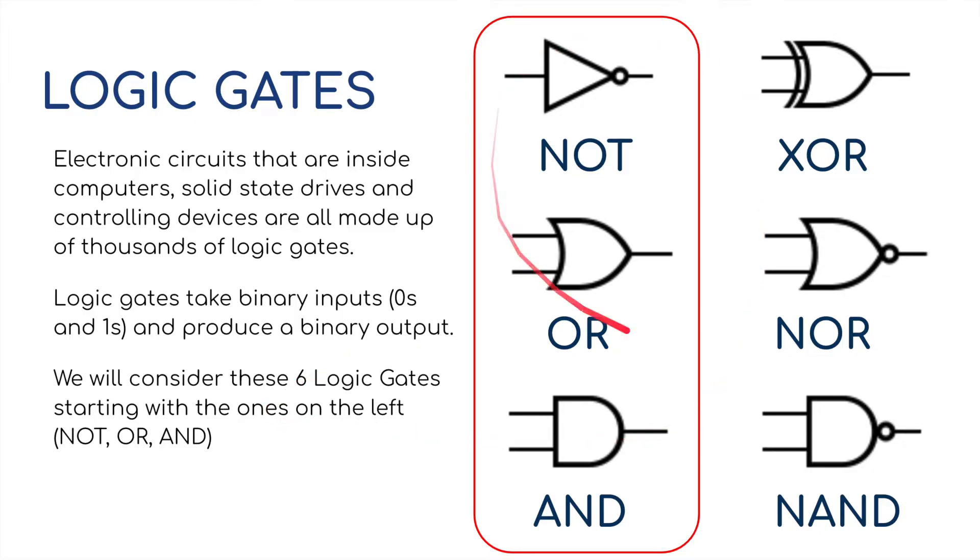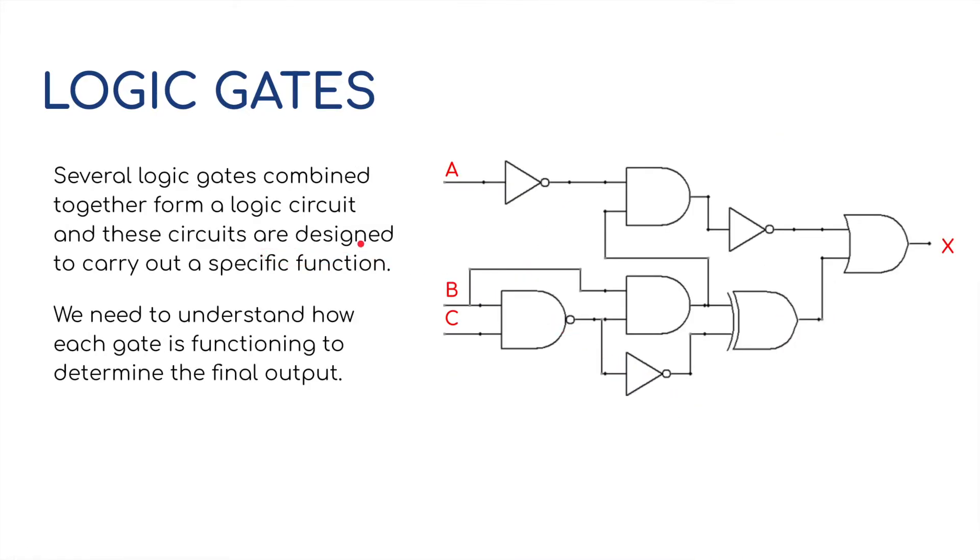We will consider these six logic gates, but we'll start with the NOT, the OR, and the AND. Several logic gates combined together form what they call a logic circuit, and these circuits are designed to carry out a specific function. As you can see here, we've got several gates all attached together. Three different inputs, A, B, and C, where the electricity is going to pass through this circuit until it gets to the final X here, which is the output. We need to understand how each gate is functioning to determine the final output.